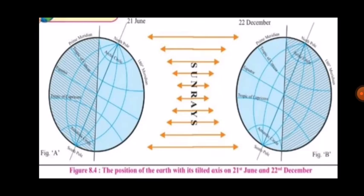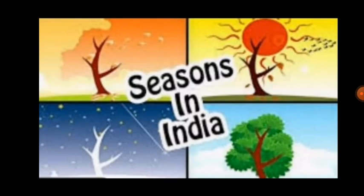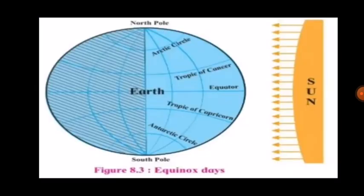Seasons are decided on the basis of the duration of sunlight, equinox, and solstice. The equatorial region does not experience any change of season, hence the climate in that region does not change at all. In places beyond the equatorial region, due to local conditions, seasons other than summer and winter are seen. For example, rain occurs in India from June to September. Therefore we consider four seasons: summer, the rainy season, the period of retreating monsoon, and winter. In Europe and North America there are also four seasons: summer, autumn, winter, and spring.